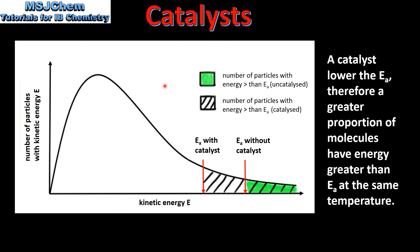Here we have a Maxwell-Boltzmann distribution curve. The green area represents the number of particles with energy greater than the activation energy for an uncatalyzed reaction, and the shaded area represents the number of particles with energy greater than the activation energy for a catalyzed reaction. A catalyst lowers the activation energy, therefore a greater proportion of molecules have energy greater than the activation energy at the same temperature.